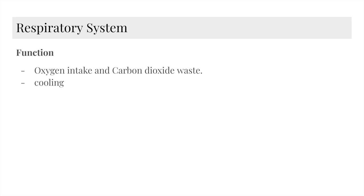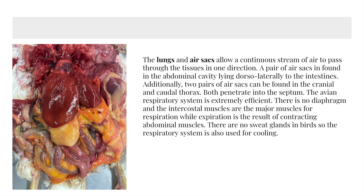Moving on to the respiratory system. The function is for oxygen intake and carbon dioxide waste, and for cooling. The lungs and air sacs allow a continuous stream of air to pass through the tissues in one direction. The pair of air sacs is found in the abdominal cavity, lying dorsolaterally to the intestines. Additionally, two pairs of air sacs can be found in the cranial and quadral thorax, and both penetrate into the septum. The avian respiratory system is extremely efficient. There is no diaphragm in the intercostal muscles, and the major muscles for respiration, while expiration is the result of contracting abdominal muscles. There are no sweat glands in birds, so the respiratory system is also used for cooling.